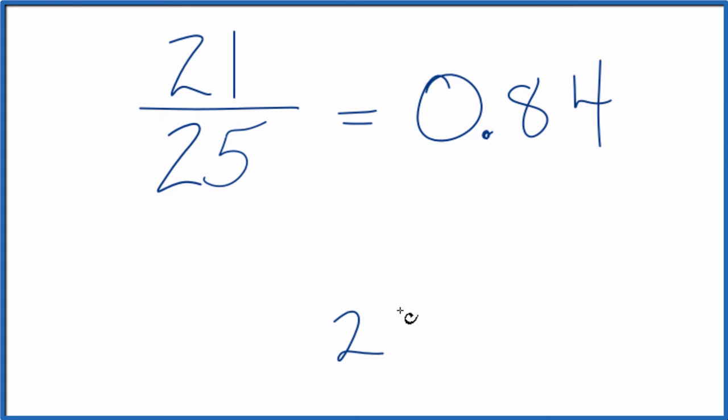The other way is we could take 21 and divide 25 into 21 longhand. So 25 doesn't go into 21. Let's put a zero point up here, and then we can add a zero on the end.